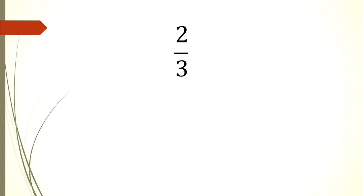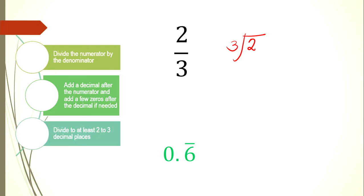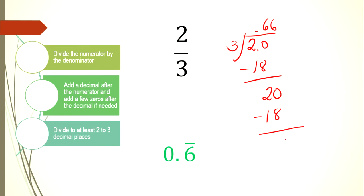Another example is 2/3. The answer is 0.666 and so on — that's why we place a vinculum (bar) on top of the repeated digit 6. Trying 2 divided by 3: we cannot divide that, so we add a zero. 20 divided by 3 is 6; 6 times 3 is 18; remainder 2. Add zero again: 6, and so on. It is a non-terminating decimal — simply written as 0.6 with a vinculum.